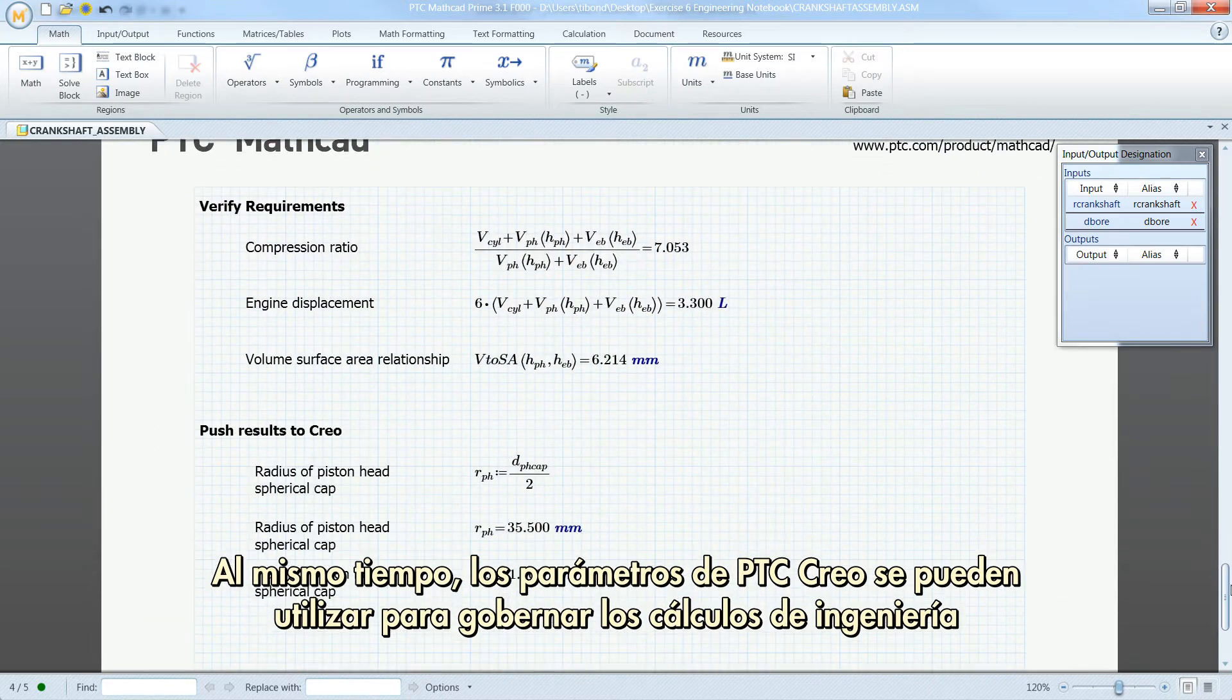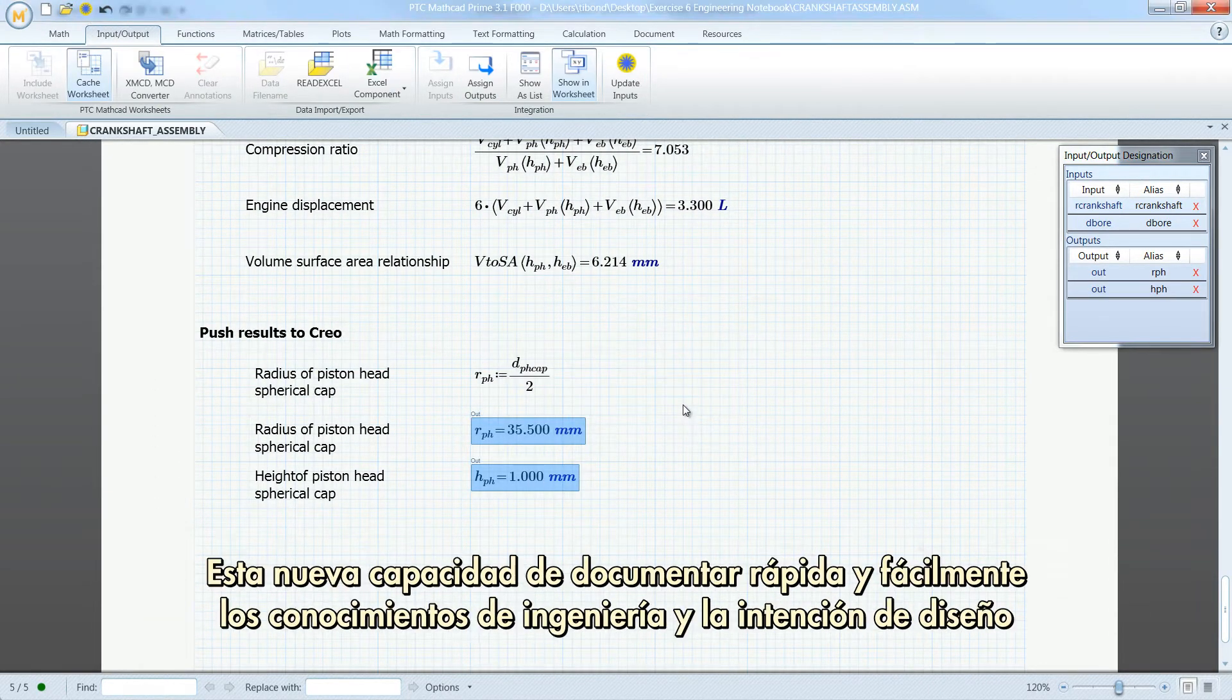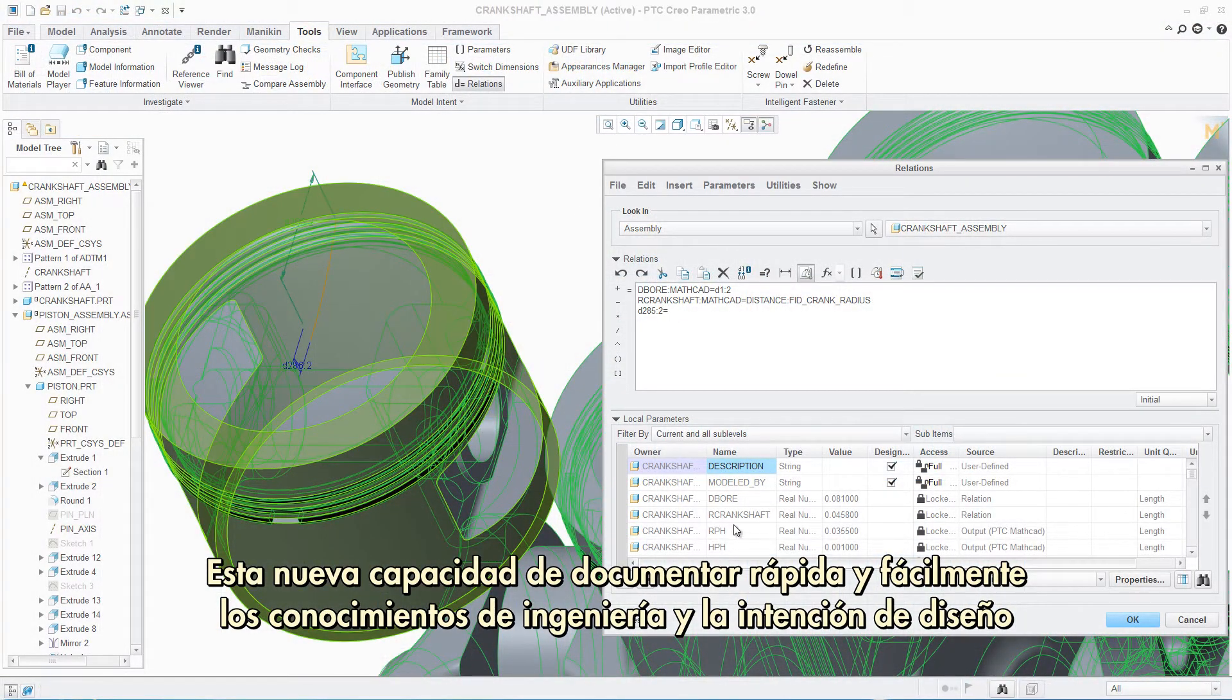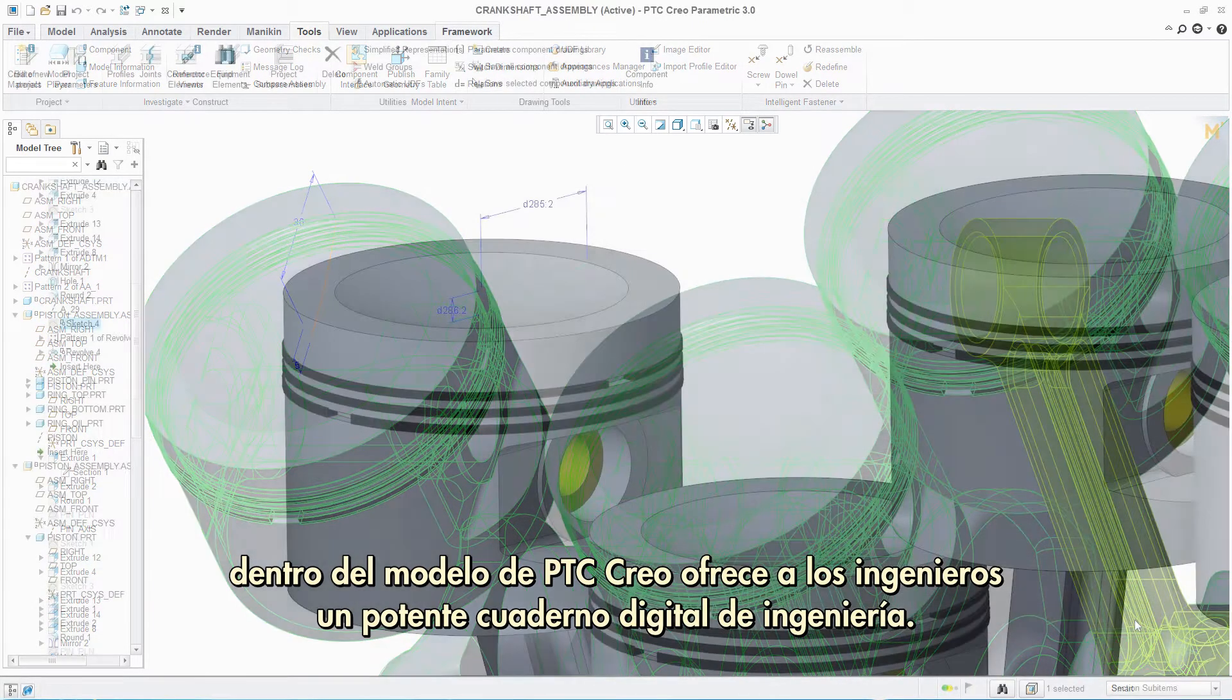At the same time, parameters from PTC Creo can be used to drive engineering calculations. This new ability to quickly and easily document engineering knowledge and design intent inside the PTC Creo model provides engineers with a powerful digital engineering notebook.